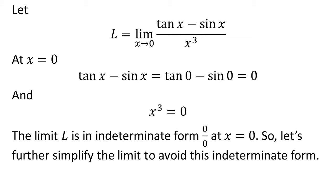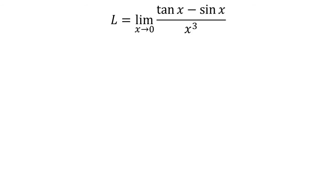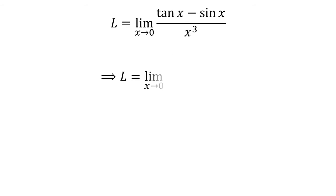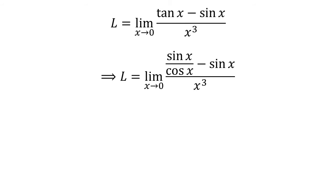At x equal to zero, tangent of x minus sine of x is equal to zero, so the limit is the indeterminate form zero upon zero. Let us further simplify the limit to avoid this indeterminate form. We know tangent of x is equal to sine of x upon cosine of x; here I have replaced tangent of x by sine of x upon cosine of x.